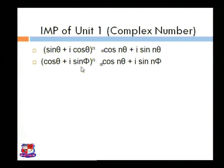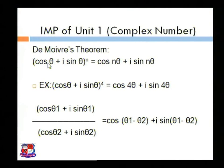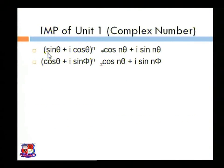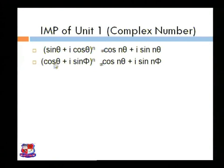Our next important note: (sin theta plus i cos theta) raised to n does not equal cos n theta plus i sin n theta — these are different forms. Similarly, (cos theta plus i sin phi), where phi is a different angle, cannot have the power multiplied directly. It does not equal cos n theta plus i sin n phi. The angles must be the same, and we require the standard cos theta plus i sin theta form.